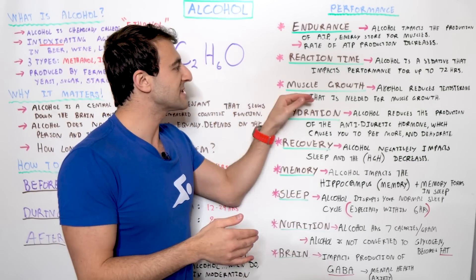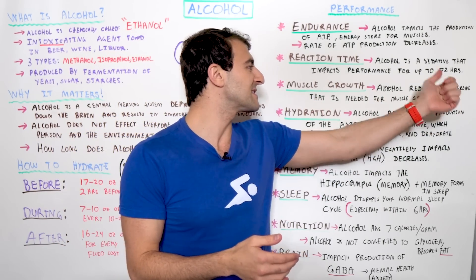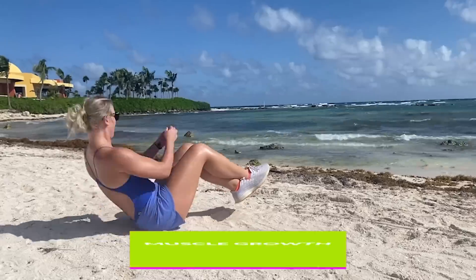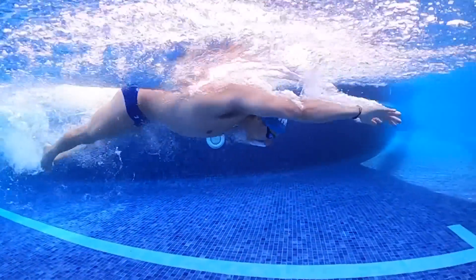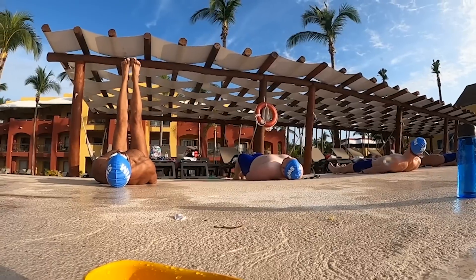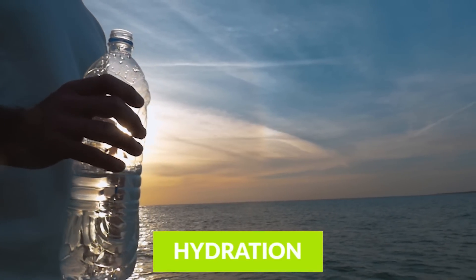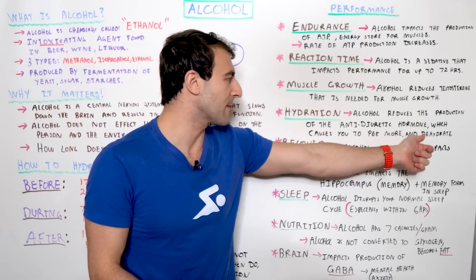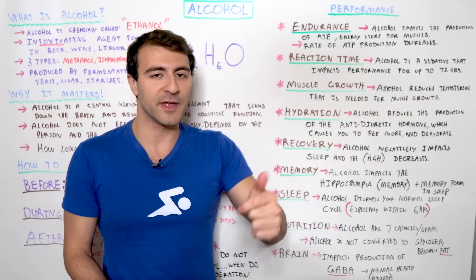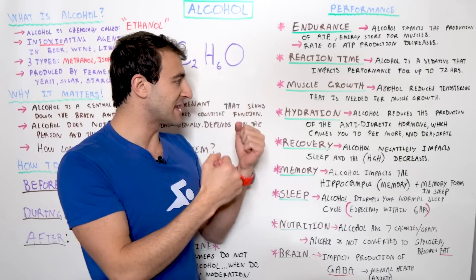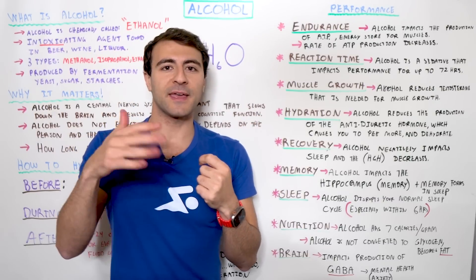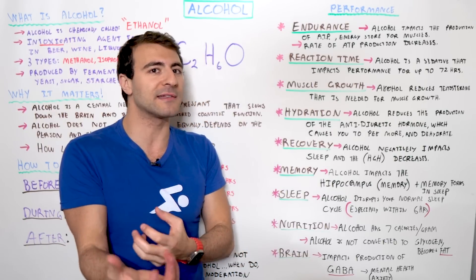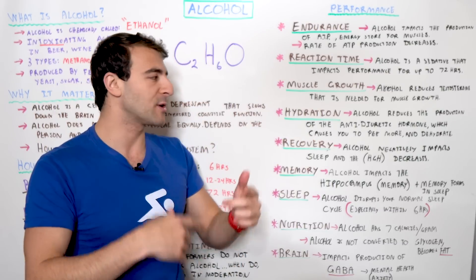It's also important to remember that muscle growth takes a hit because alcohol reduces testosterone, and testosterone is needed in both men and women for muscle growth. So if you're trying to grow muscle, you're going to take a hit on that. In terms of hydration, alcohol reduces the production of the anti-diuretic hormone, which causes you to pee more and become more dehydrated. Your body is not retaining the fluid it needs, so you're going to be dehydrated more quickly when you have alcohol in your system.